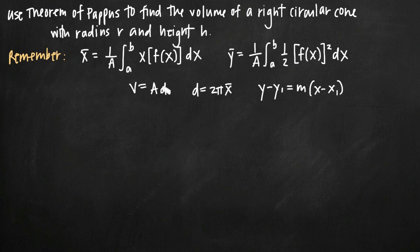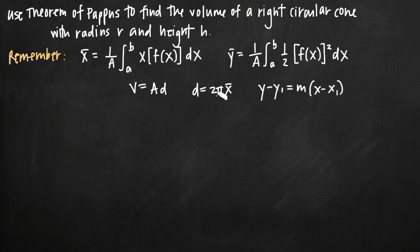So basically what we need to do is draw the figure, find or sketch a cross-section, identify its area, and then find the distance traveled by the centroid of the plane region. The distance formula is actually 2π times the x-coordinate of the centroid of the plane region, because we're going to be revolving the centroid around the y-axis.